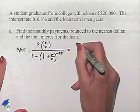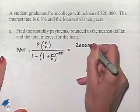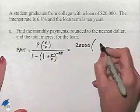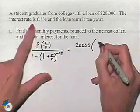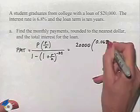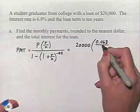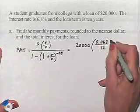For this problem, the P is going to be 20,000. Our value of R is going to be the 6.8% written as a decimal, divided by monthly payments, meaning we're going to be dividing by 12.